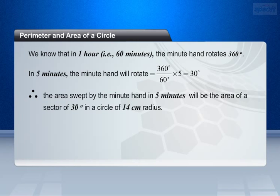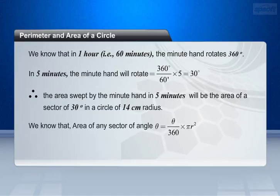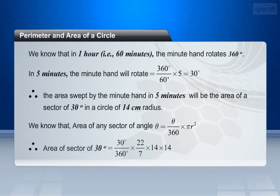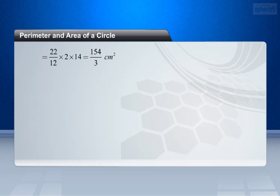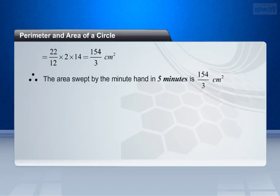Therefore, the area swept by the minute hand in 5 minutes will be the area of a sector of 30 degrees in a circle of 14 cm radius. We know that area of any sector of angle theta equals theta by 360 into pi r square. Therefore, area of sector of 30 degrees equals 30 degrees by 360 degrees into 22 by 7 into 14 into 14, equals 22 by 12 into 2 into 14, equals 154 by 3 cm square. Therefore, the area swept by the minute hand in 5 minutes is 154 by 3 cm square.